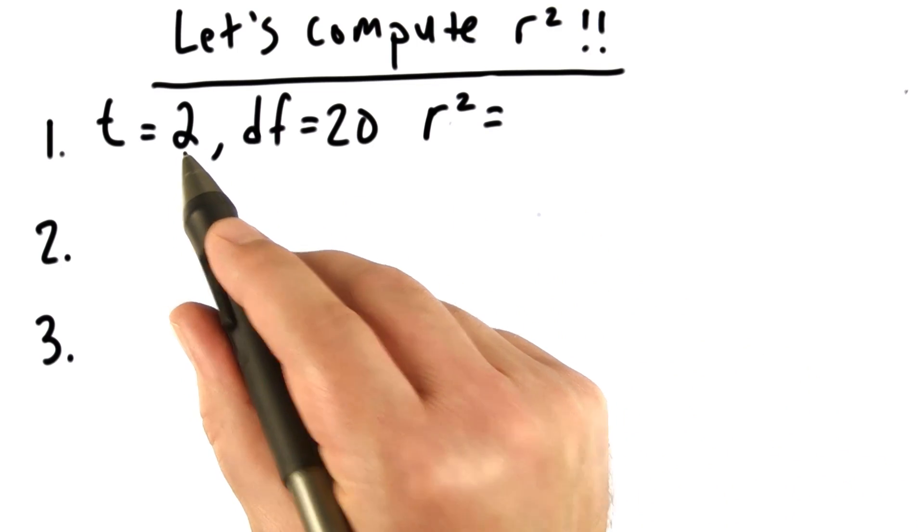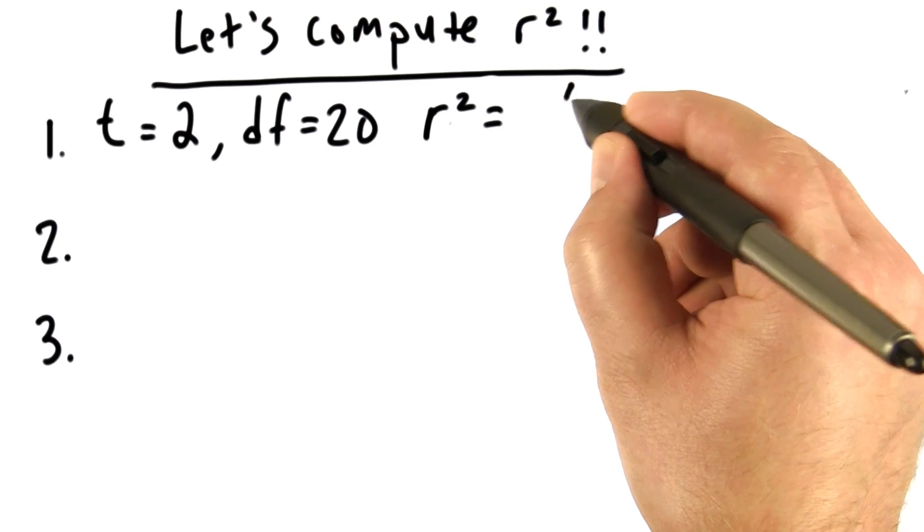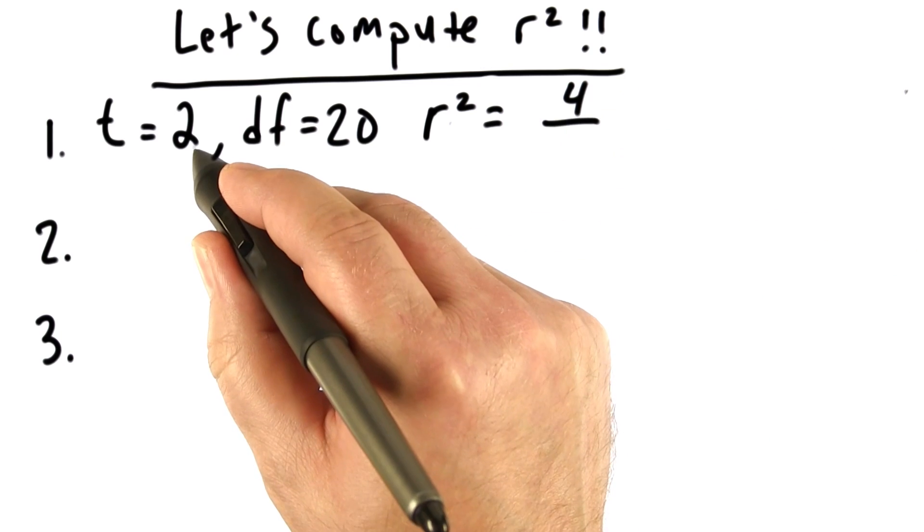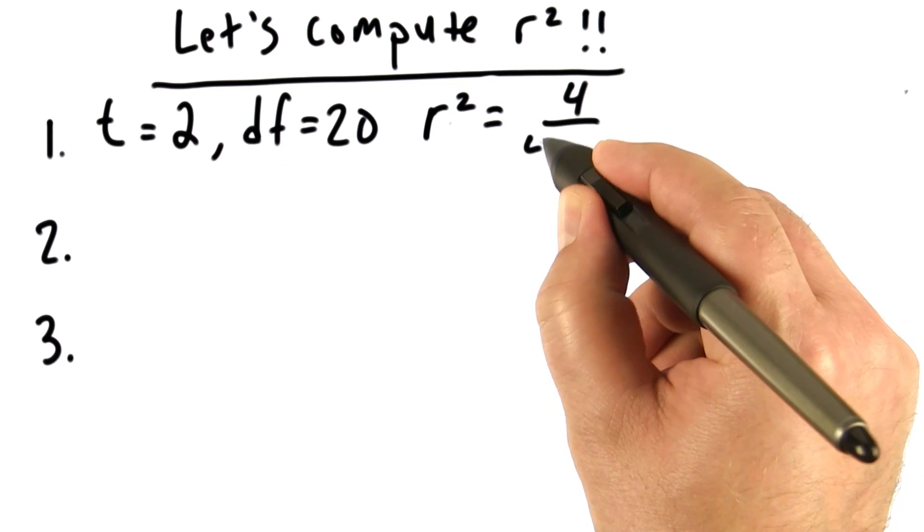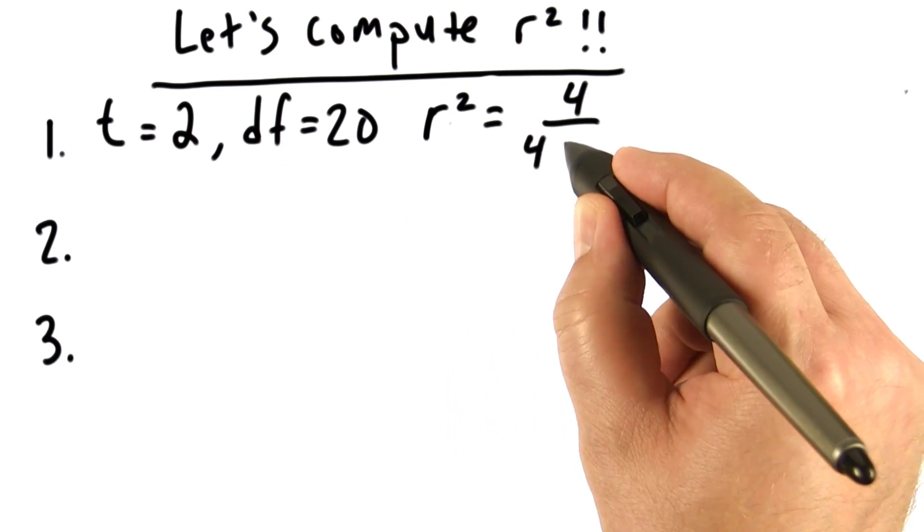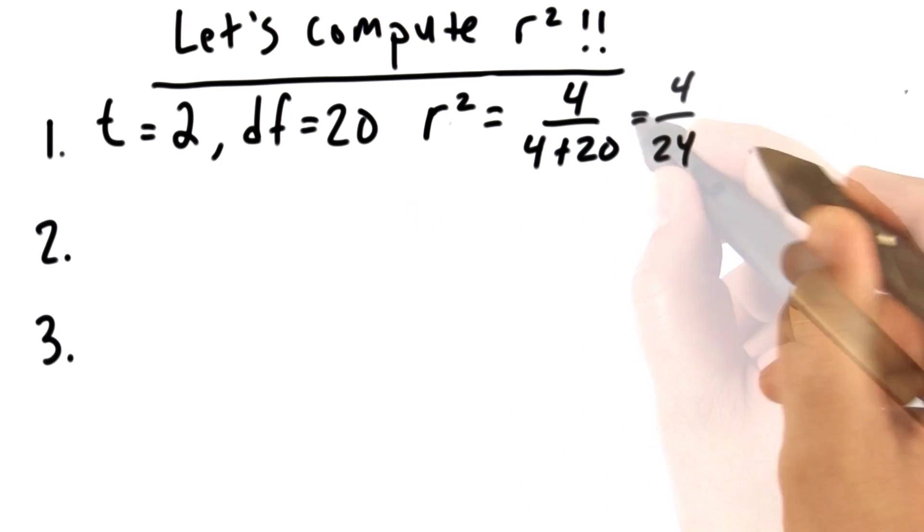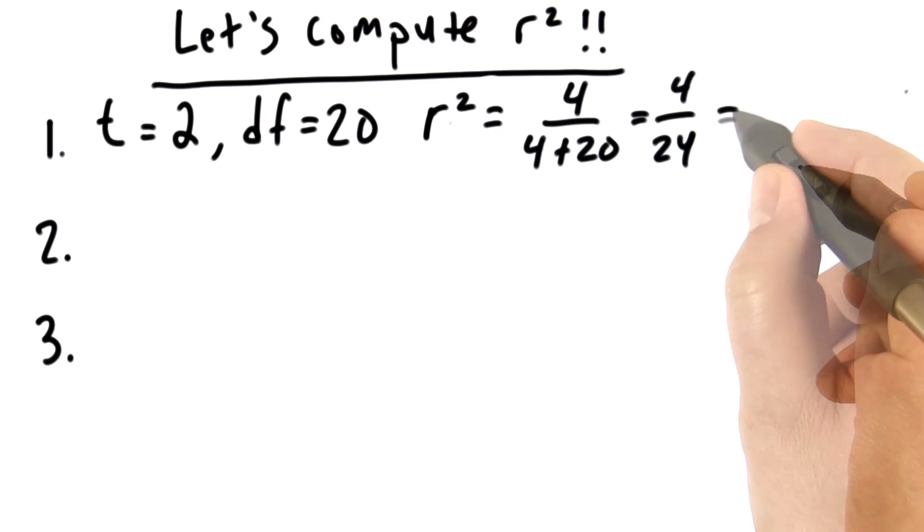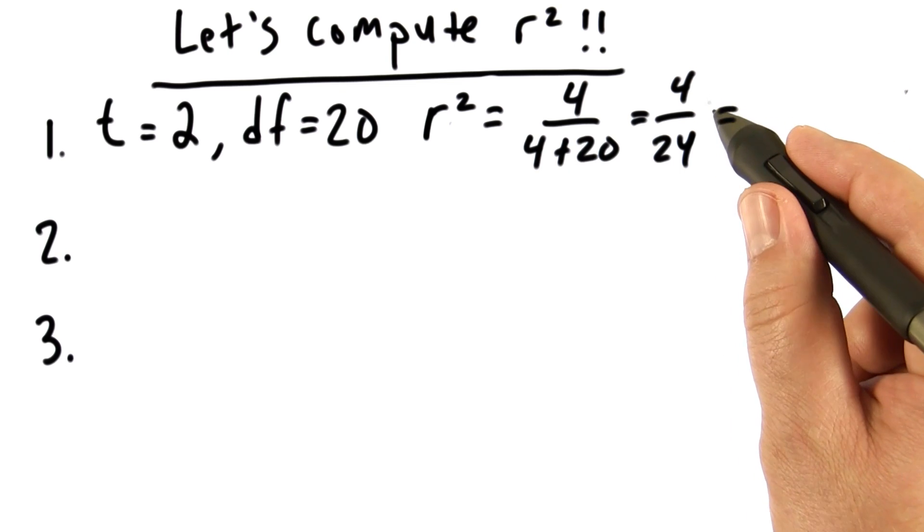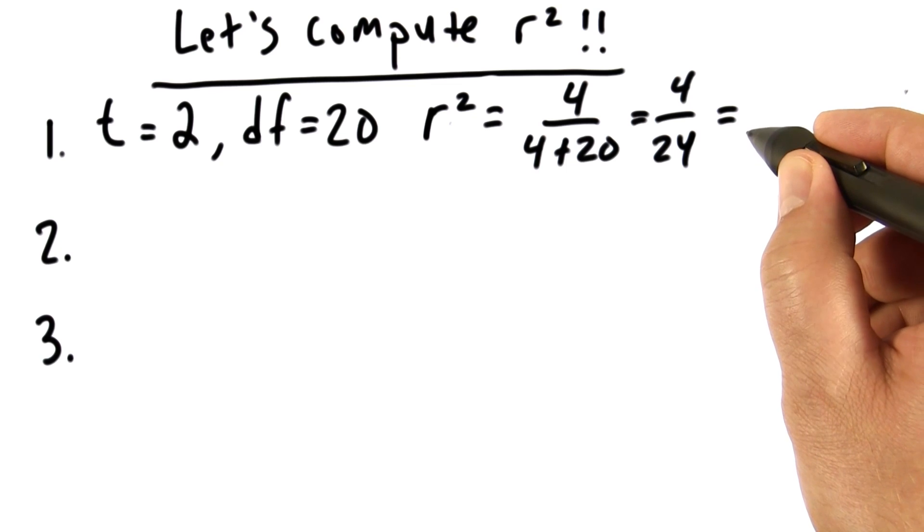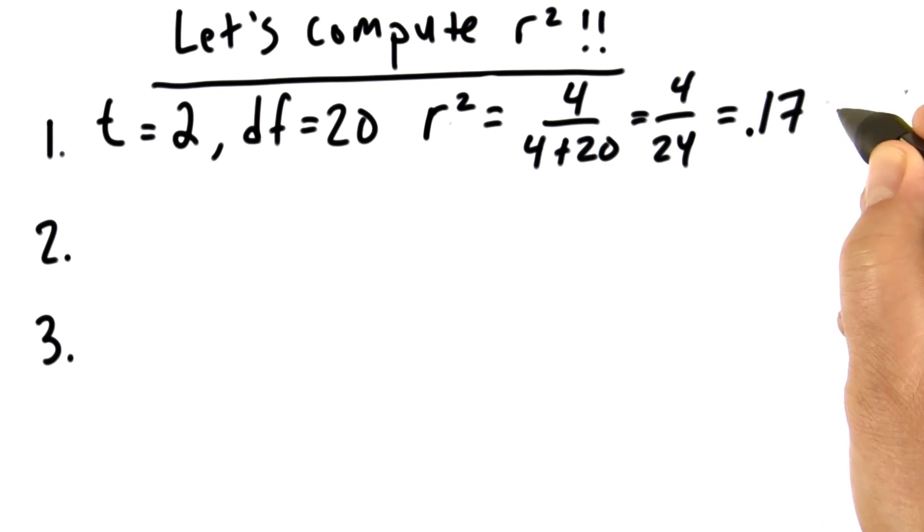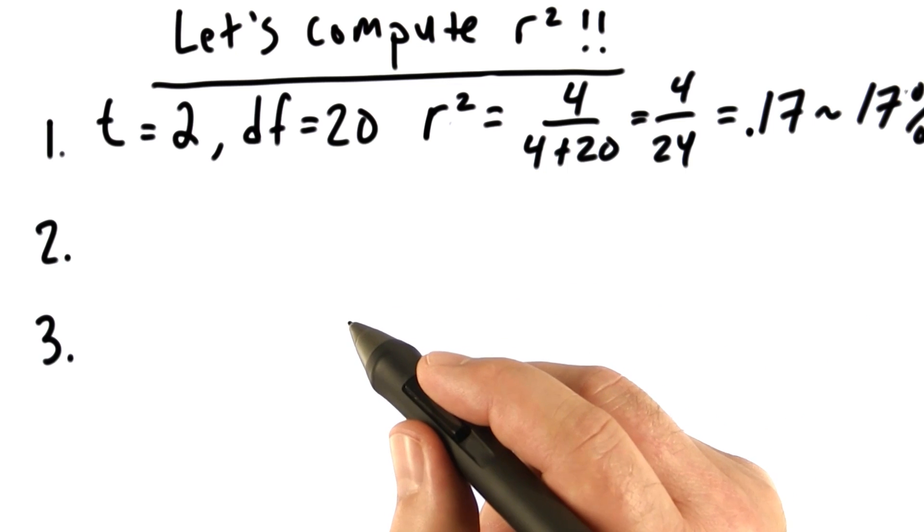If we take our t value and square it and put that in the numerator, that is 4. We take t and square it again, that is a 4 again, and we add our degrees of freedom. We should get 4 over 4 plus 20. That gives us 4 over 24. And if we divide 24 into 4 and round to two decimal places, that gives us .17 or 17%. Let's try another couple of examples.